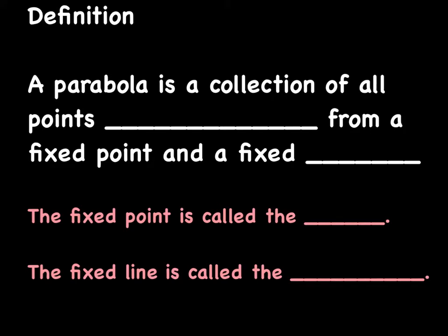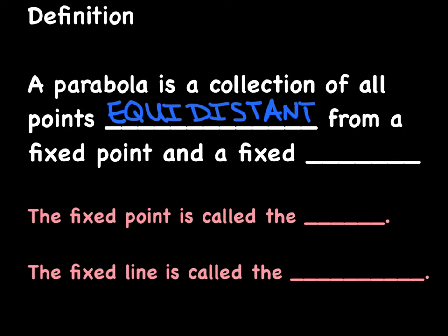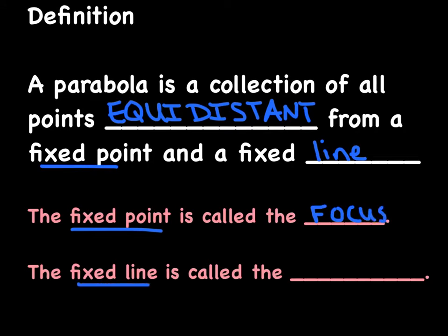Let's create some formal definitions for our notebook, then spend the rest of the video interpreting them. A parabola is a collection of all points that are equidistant — meaning the distances are equal — from a fixed point called the focus, and a fixed line called the directrix. The fixed point is called the focus, and the fixed line is called the directrix. The directrix is always perpendicular to the axis of symmetry.